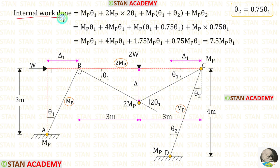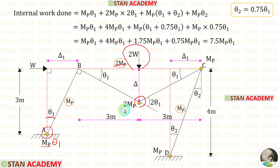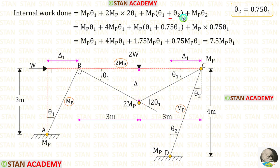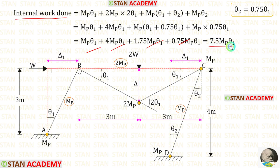Now let us find the internal work done. At point A: MB × theta 1. Under the point load (beam): 2MB × 2 theta 1. At joint C: MB × (theta 1 + theta 1 + theta 2), then multiply by MB. At point D: MB × theta 2. Substituting theta 2 equals 0.75 theta 1 and adding all four terms, the internal work done equals 7.5MB·theta 1.